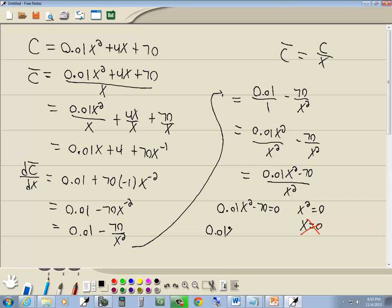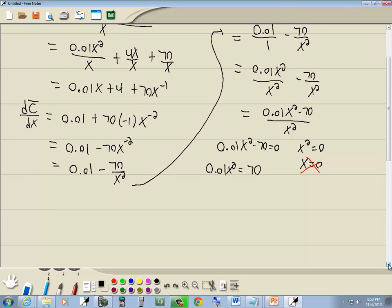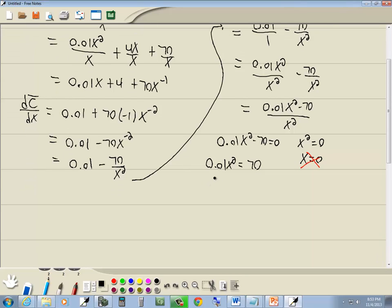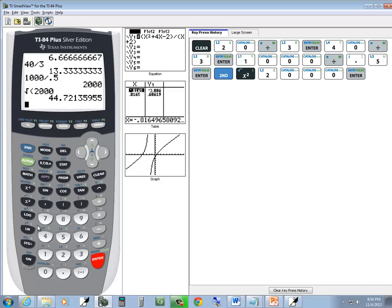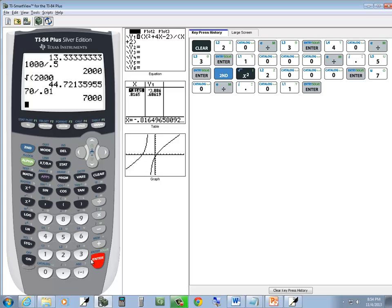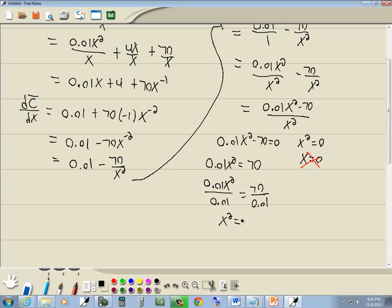This other one: we've got 0.01x squared, take the negative 70 to the right side, becomes a positive 70. Divide both sides by 0.01. I'm not very good with decimals. I think that's 7,000, but let me go look. 70 divided by 0.01 is 7,000.